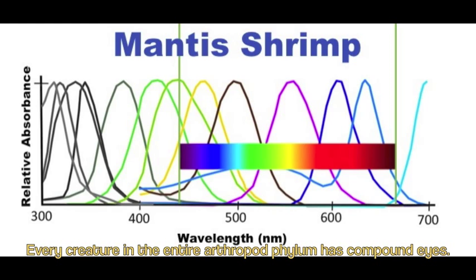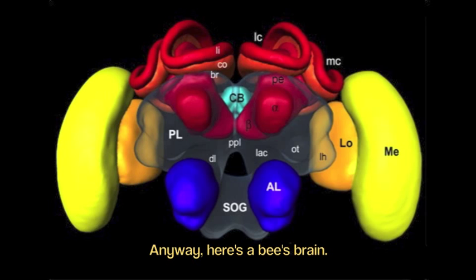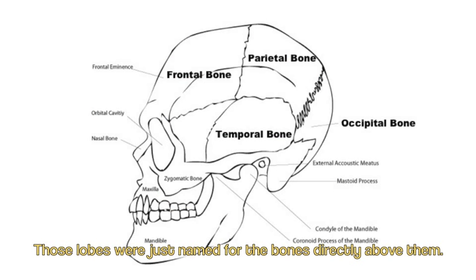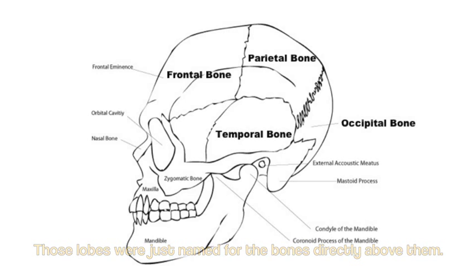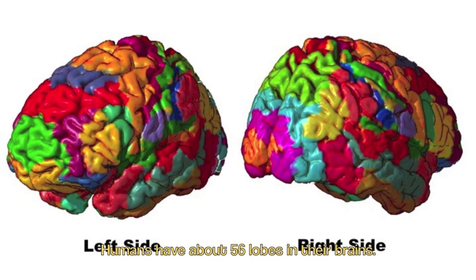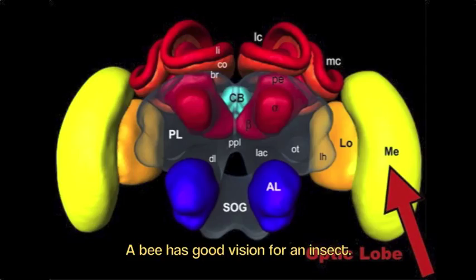Every creature in the entire arthropod phylum has compound eyes. Here's a bee's brain — there are lots of different lobes, and each one is dedicated to one thing or another. A human's brain only seems to have five lobes, but that's not completely correct. Those lobes were just named for the bones directly above them. In 1909, Dr. Korbinian Brodmann identified 52 areas in the brain, and since then a handful of those have been subdivided, giving humans about 56 functional brain areas. The bee has good vision for an insect — its visual lobe takes up about one third of its brain.